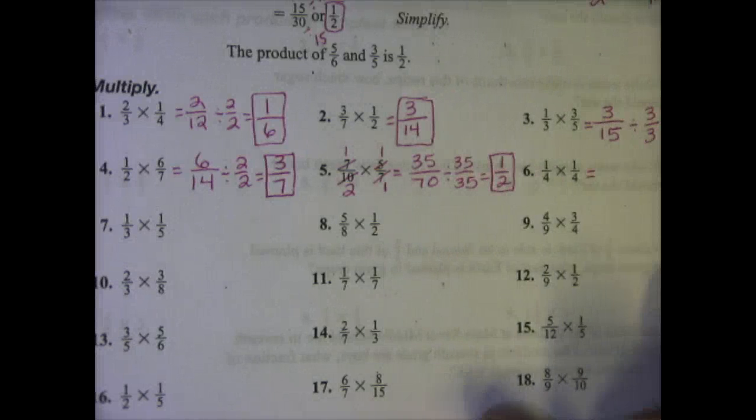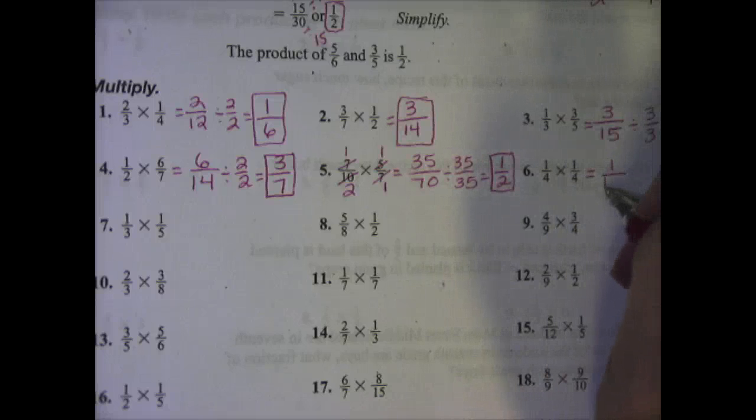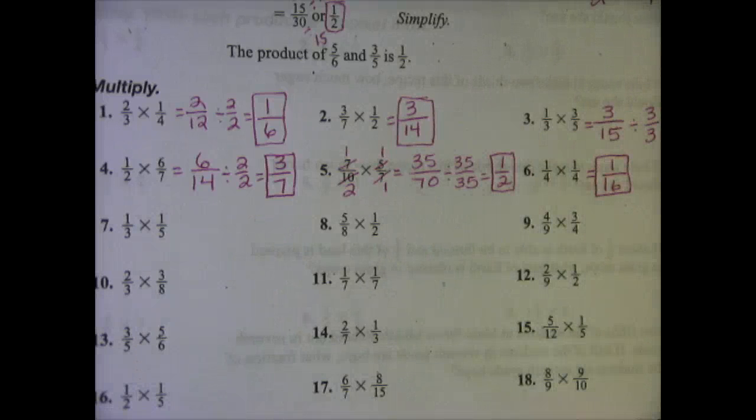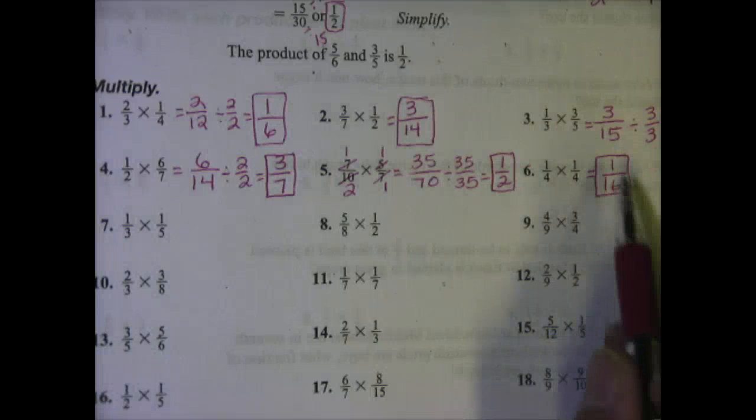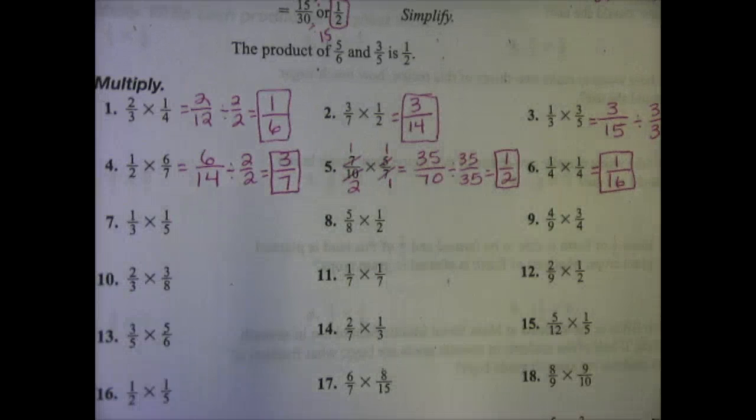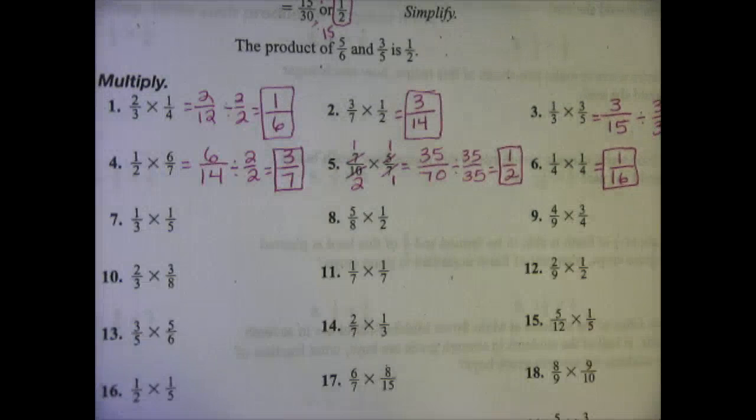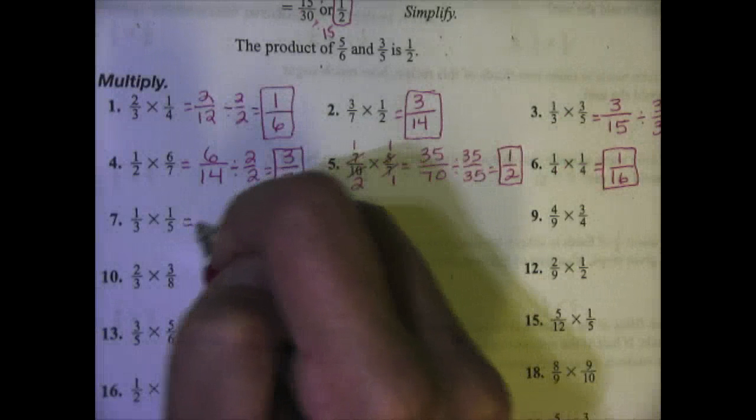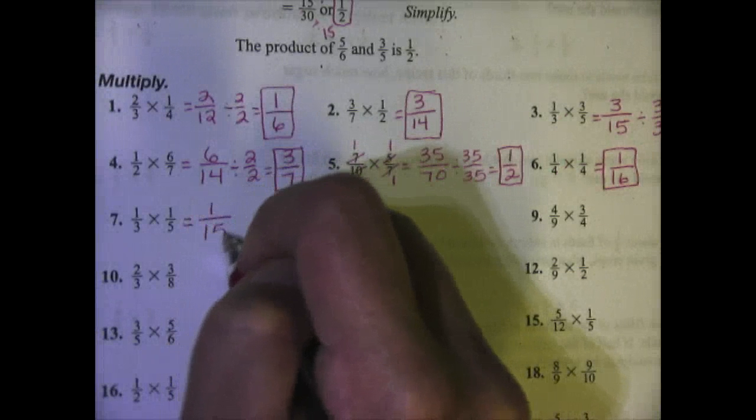Number 6. 1 times 1 is 1, 4 times 4 is 16. That is as simplified as it gets, especially since you have 1 in the numerator. Number 7, 1/3 times 1/5. 1 times 1 is 1, 3 times 5 is 15.